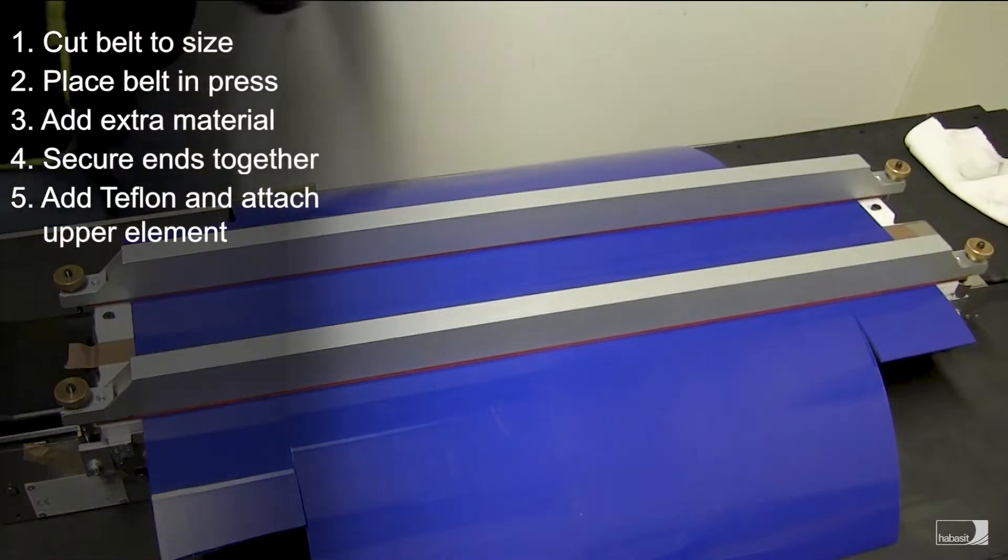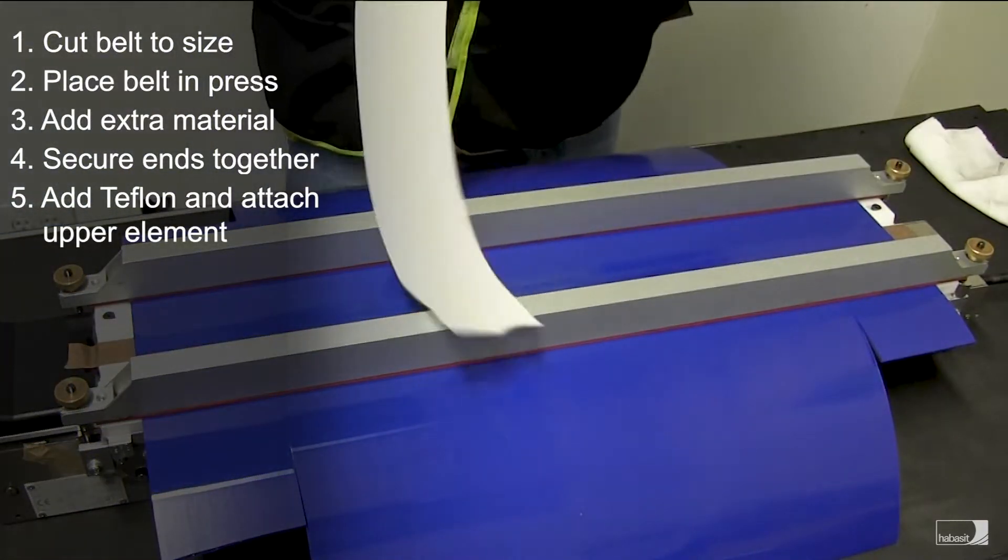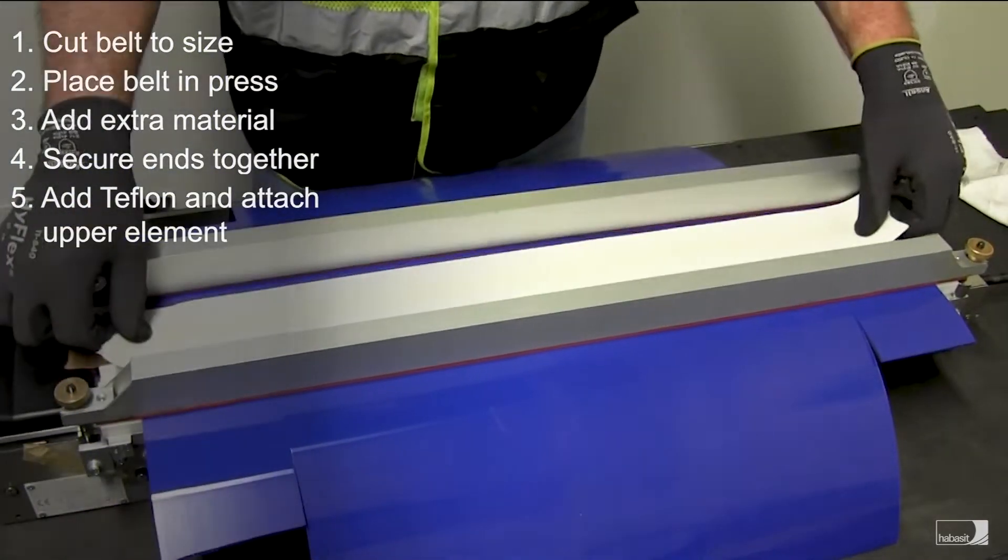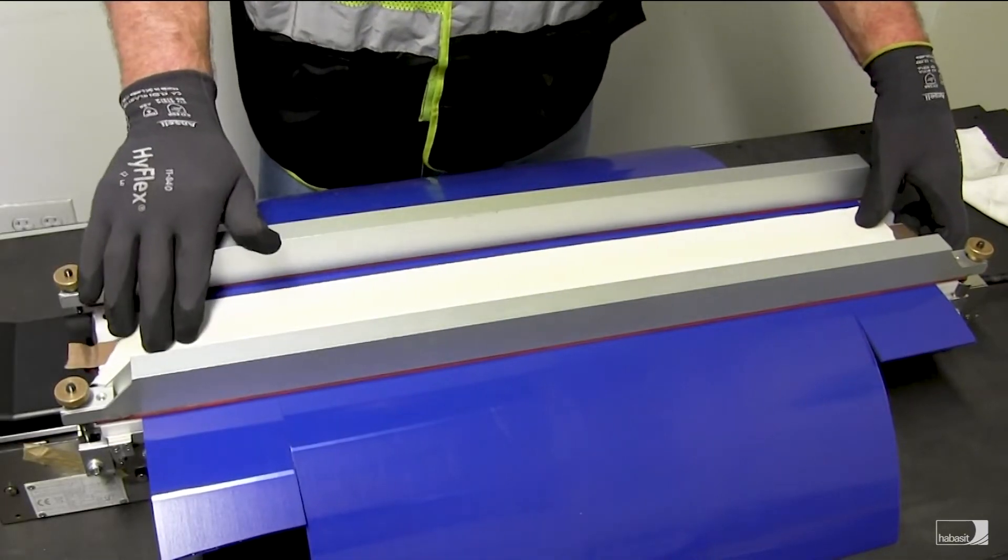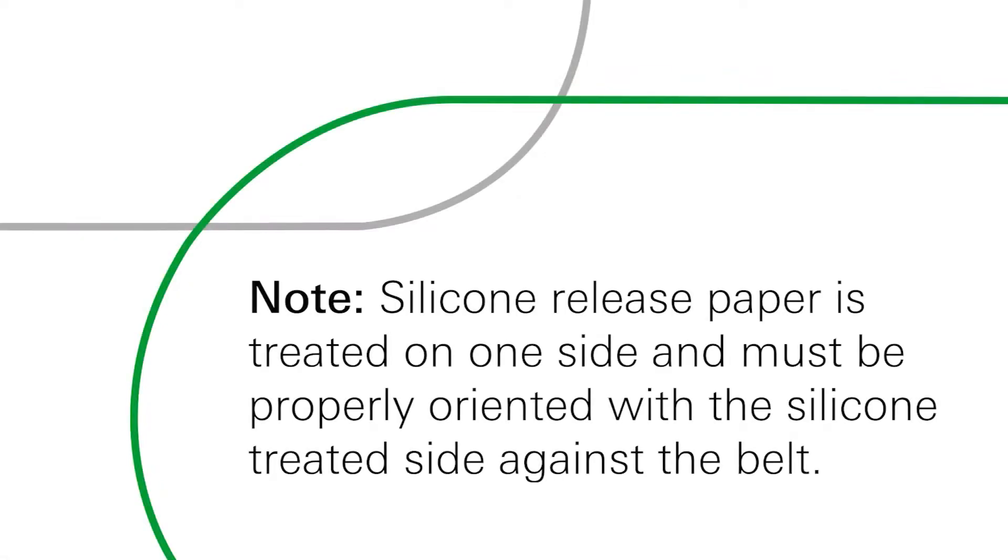Next, apply the proper Teflon or silicone splice paper to the top of the belt. If utilizing silicone paper, ensure to apply the treated side against the belt. Failure to do so will result in the paper sticking to the belt.